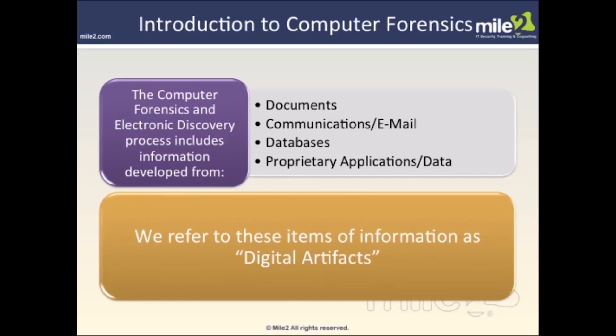The computer forensic and electronic discovery process includes information developed from documents, communications and email, databases, proprietary applications, and data. All of these terms are considered digital artifacts. What we're trying to do is find data on the computer system that is going to prove innocence or guilt on a specific case we are investigating. We identify that information and prove it in a court of law as to whether this person did it or why this person is innocent.